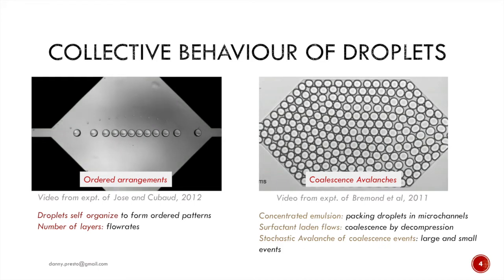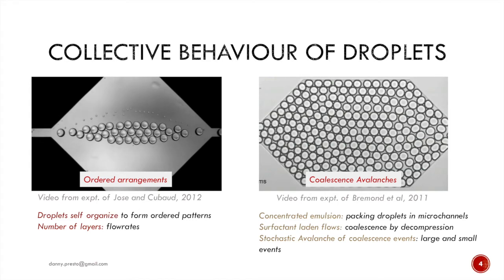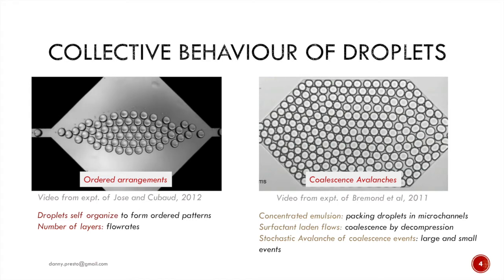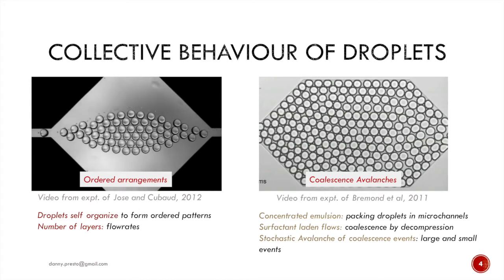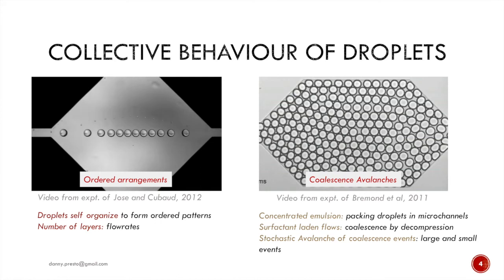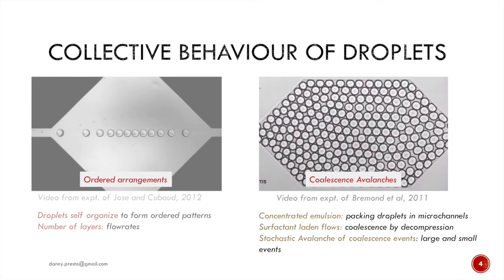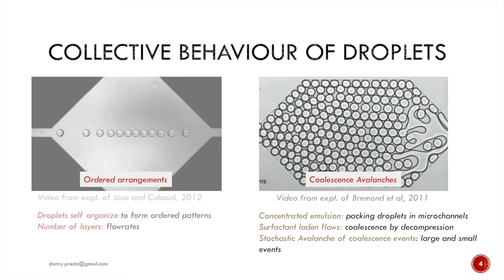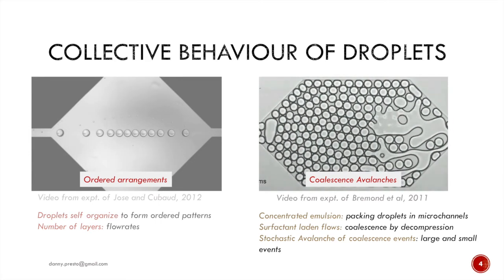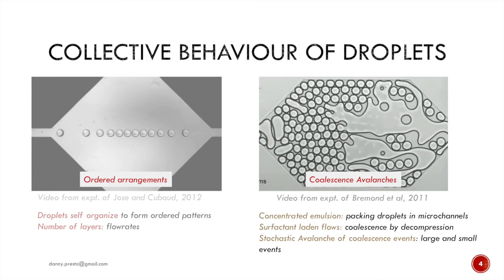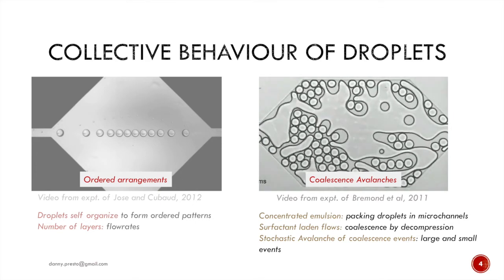On the left is an example of self-organization of droplets, where droplets entering the channel at different frequencies form different layered arrangements. The one to the right is a case where droplets tightly packed in the microchannel undergo spontaneous size stabilization by coalescence avalanches.